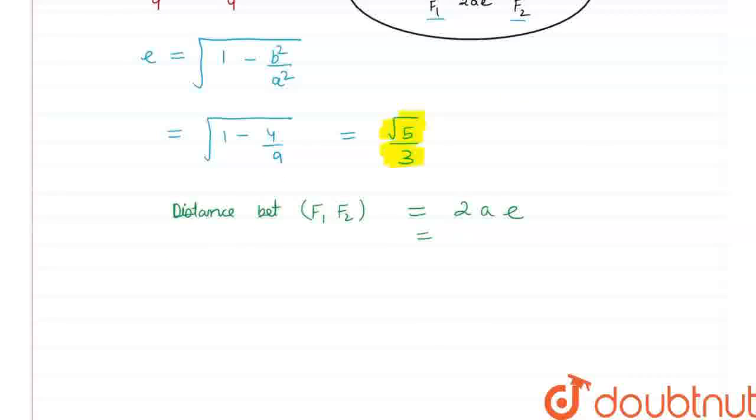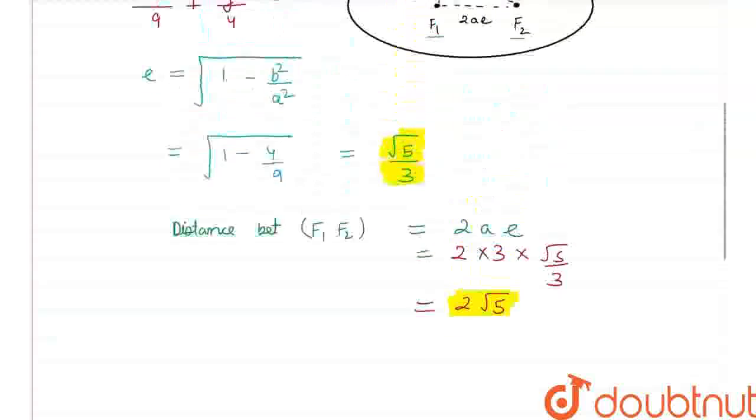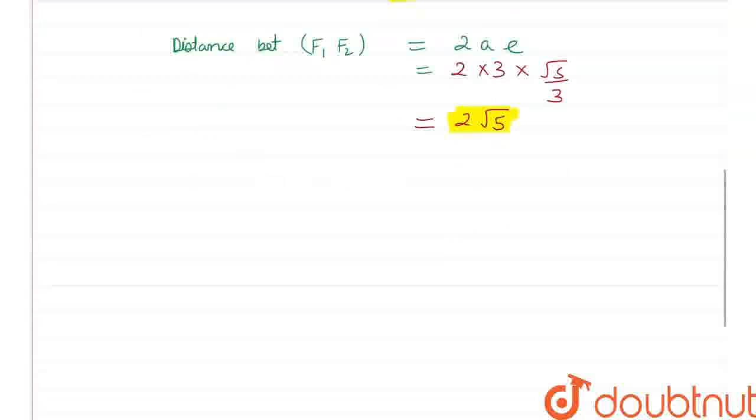So, let's put those values: 2 times 3 into root 5 by 3 it would be equal to 2 times root 5. This would be the distance between f1 and f2 and now we have to find the sum of pf1 and pf2.